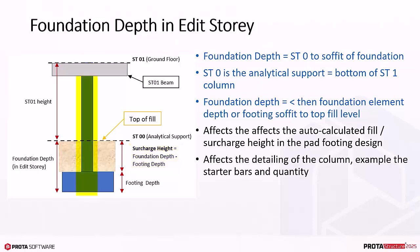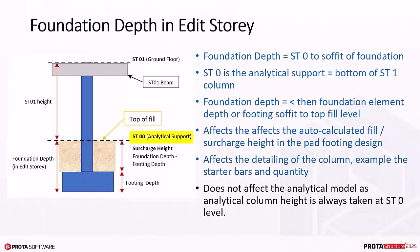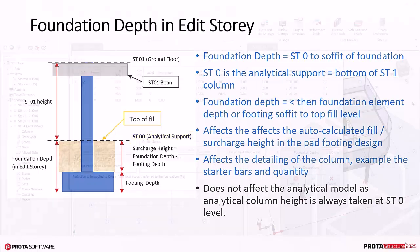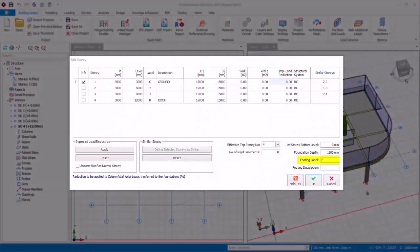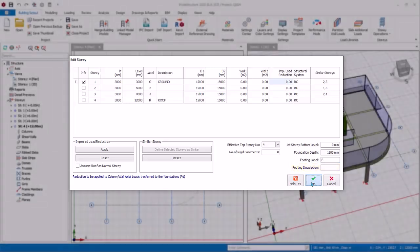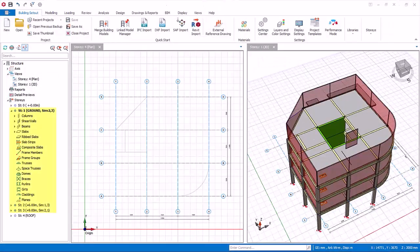This value also affects the detailing of the column — for example, the starter bars and quantity — as the column length and detailing includes the foundation depth. This value does not affect the analytical model, as the support of the column is always auto-created at ST0 level. Footing Label is the prefix applied to pad footings, and Footing Description is for your own information. Click OK to save and exit.